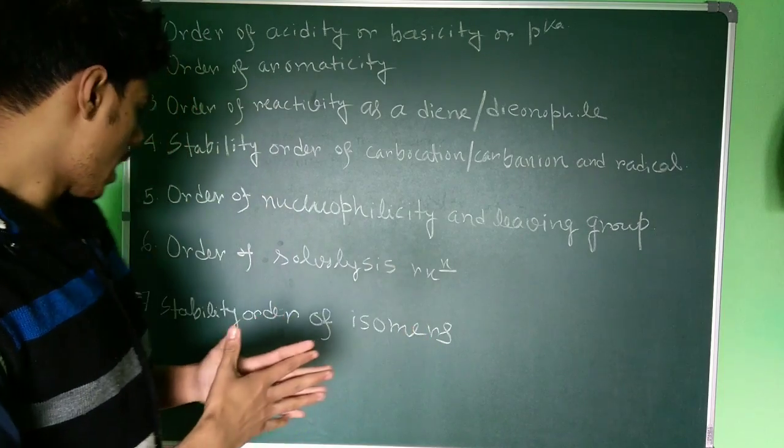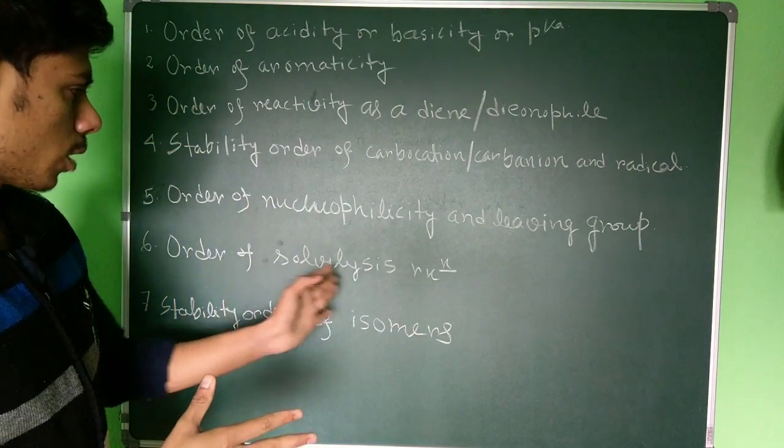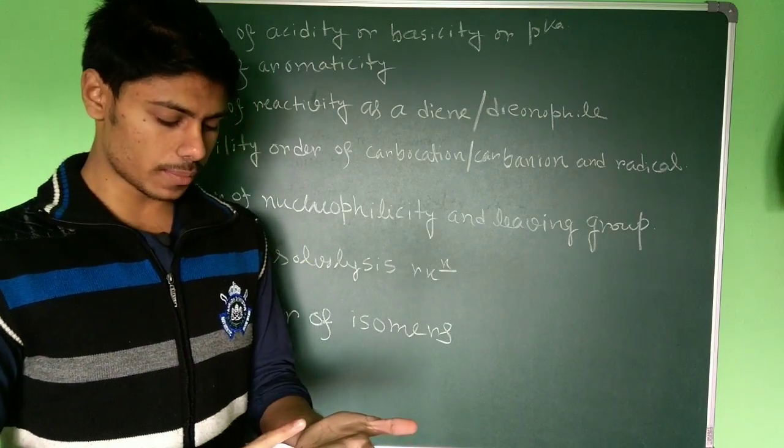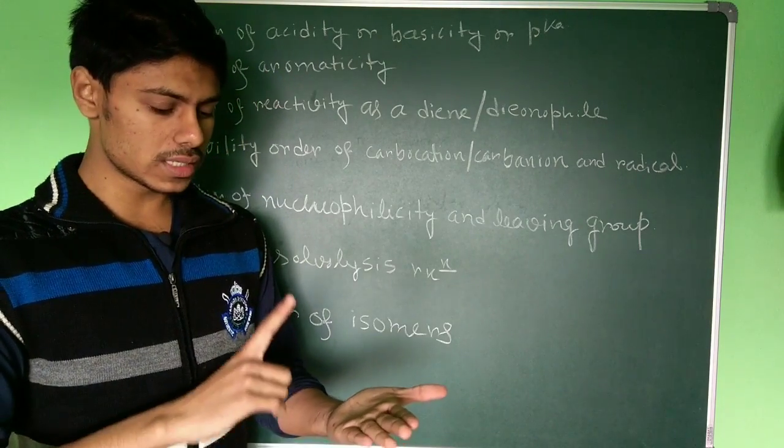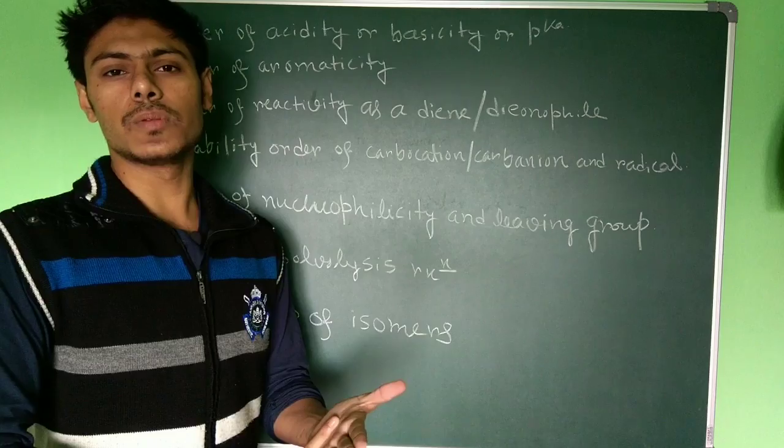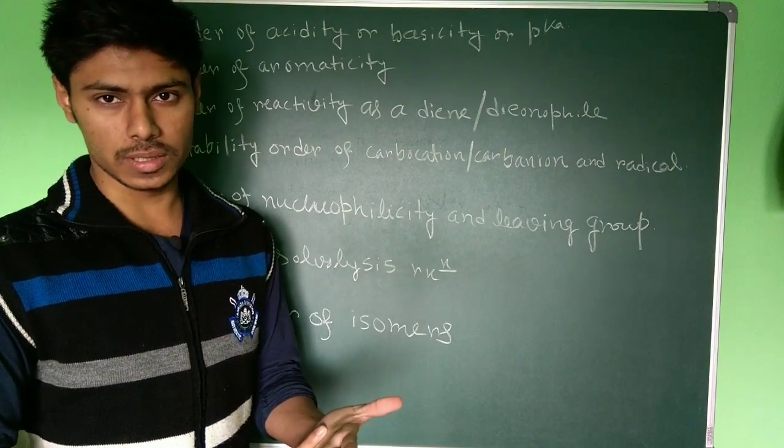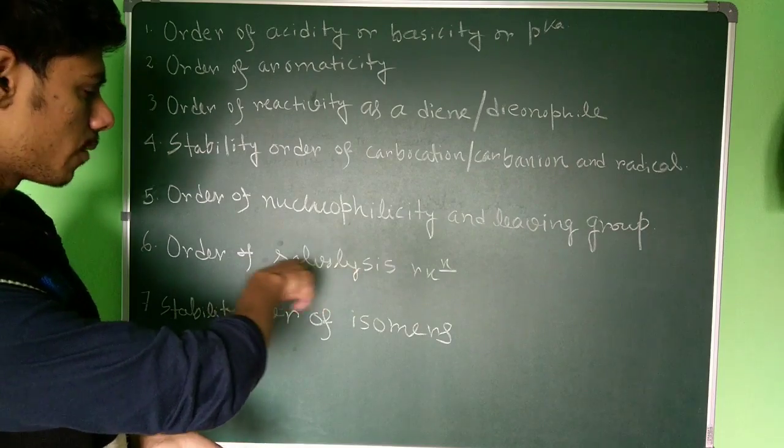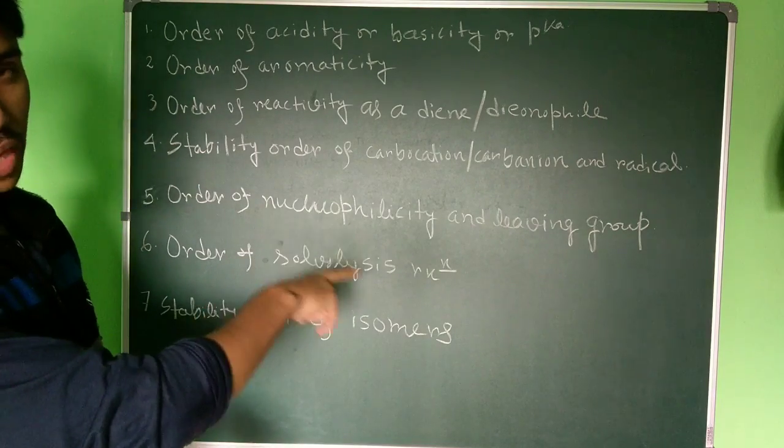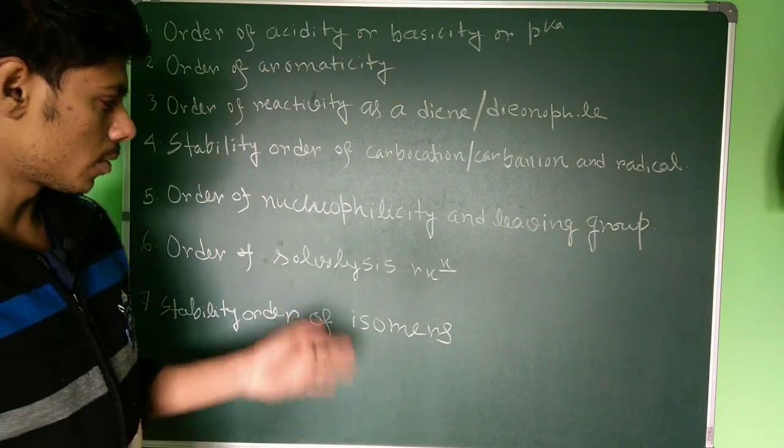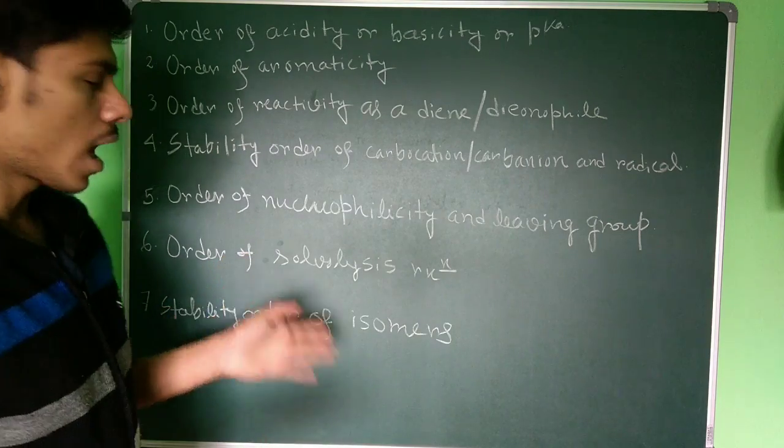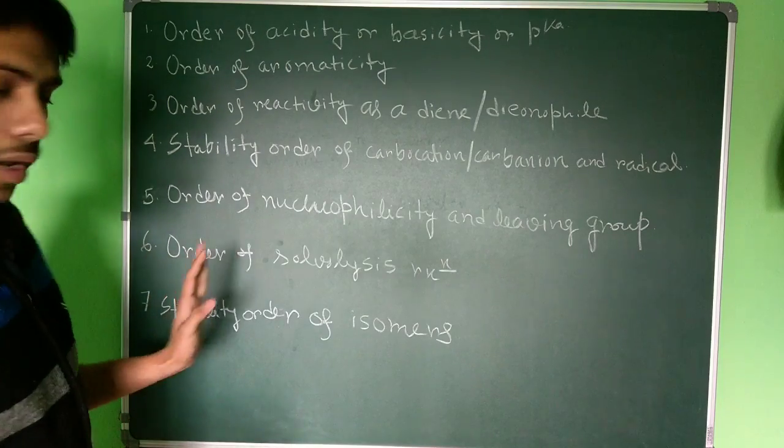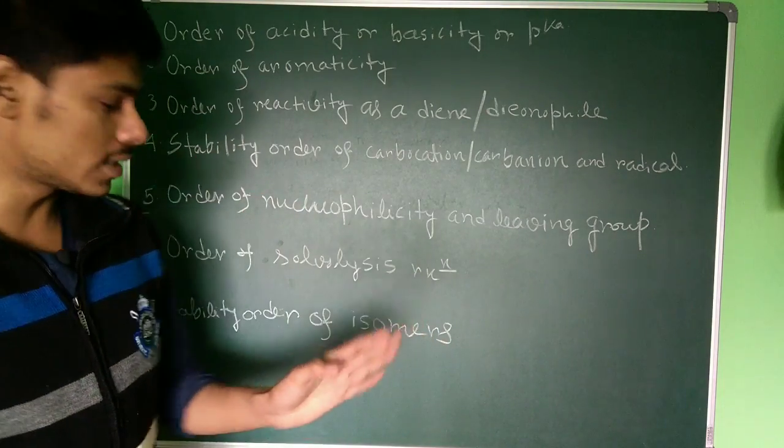The sixth point is the order of solvolysis reaction. Solvolysis basically is an SN1 reaction and here you have to look at two things: one is the stability of the carbocation which will be formed and the leaving group ability. The order of solvolysis reaction is a favorite question for GATE and JAM exam. You should practice questions and you will get it in Peter Sykes and Carey Sundberg.